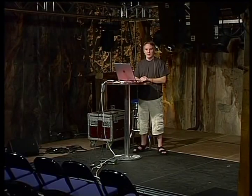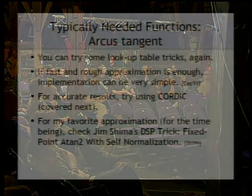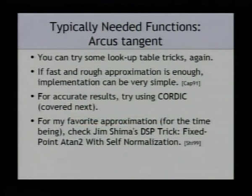Let's look at arctangent. If you need only a rough answer — like which octant you're in rather than the exact angle — it may be enough to use simple logic with a few if statements. There should be one example like that in the references, from one of the Graphics Gems books. For more accurate results, try using CORDIC, which we'll cover next. For my favorite approximation, check out DSP coding tricks — there are compact implementations to get fairly nice fixed point arctangent results.